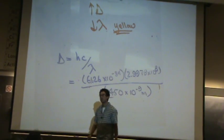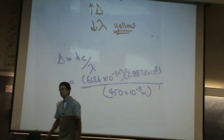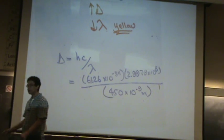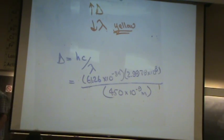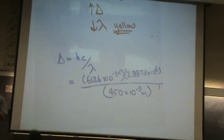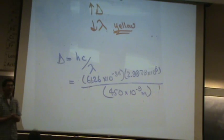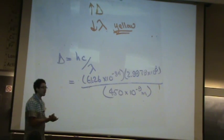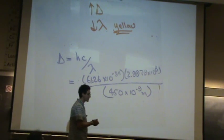Student question: are those constants going to be given on the exam? Yes, all constants are definitely given on the exam — h, c, F, Avogadro's number, and other constants you don't even need will be there.